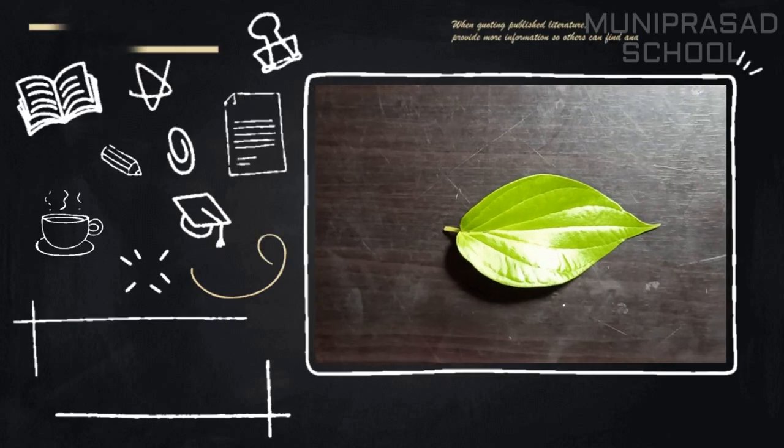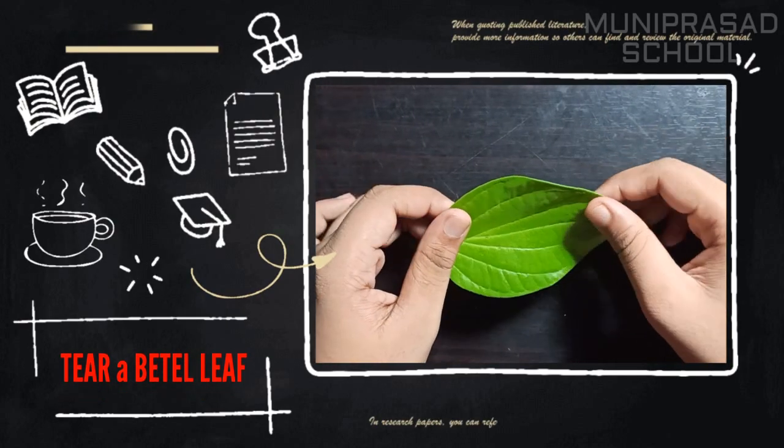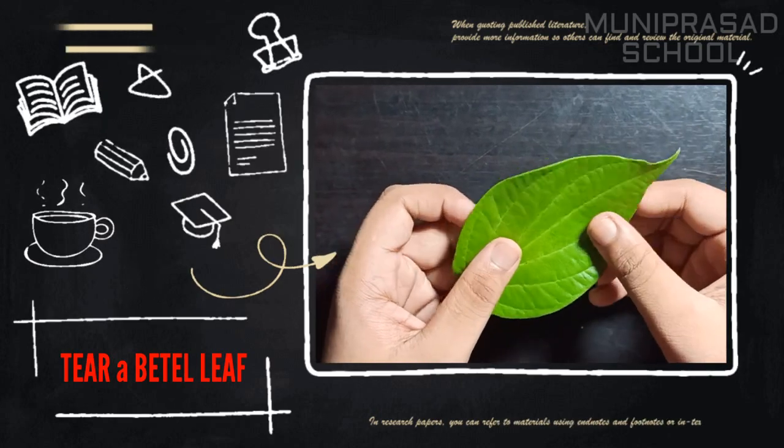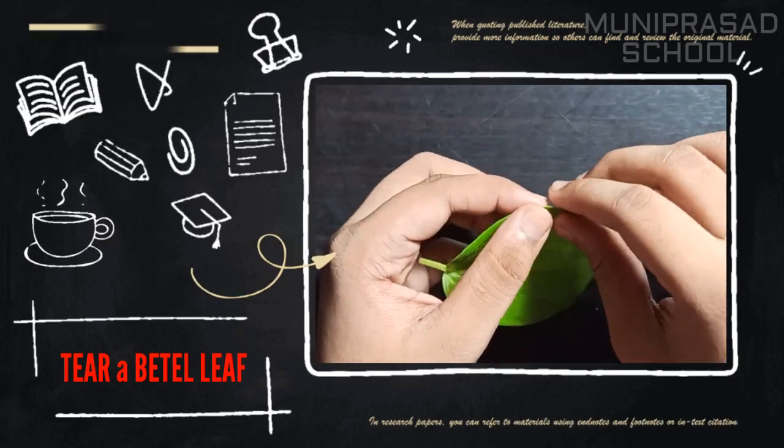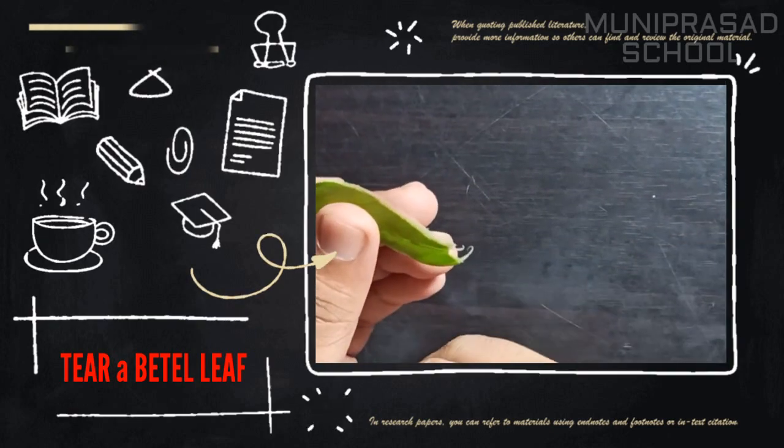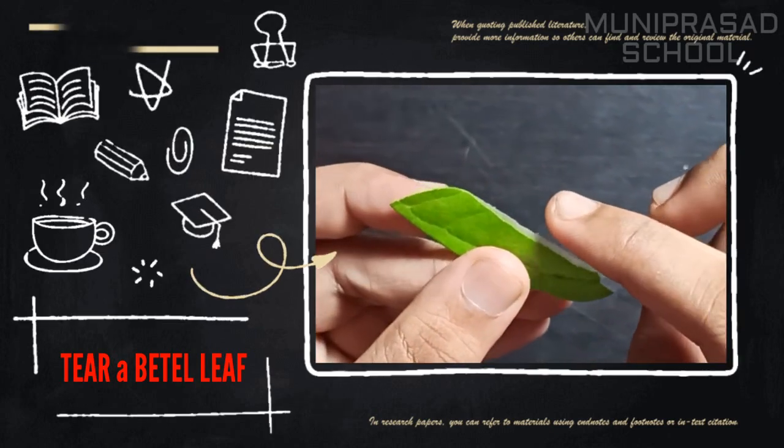Take a fresh leaf of betel plant. Tear it with a single stroke. You can see a whitish thin edge at the torn end.